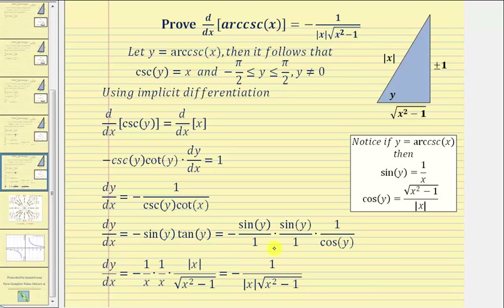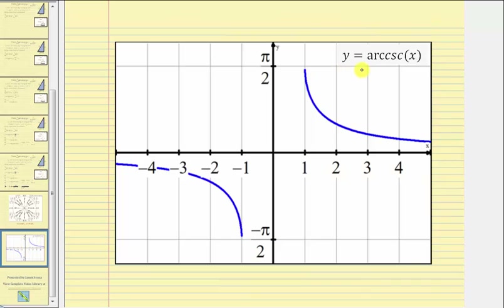The derivative function value is always negative, meaning the slope of the tangent line to f of x equals arc cosecant x is always negative, and the function is always decreasing. Let's verify this graphically. Here is the graph of y equals arc cosecant x — notice how for any point on the function, the slope of the tangent line is negative and the function is decreasing. I hope you found this helpful.